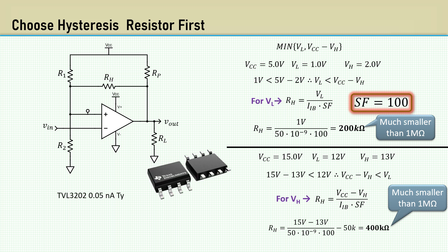Look at the TVL 3202 micropower comparator. Its input bias current is 0.05 nanoamps. That yields an RH at 400 megaohms. That's impractical and slow, even with the minimum of parasitic board capacitances. In this case, just increase the scale factor until it yields a reasonable value.